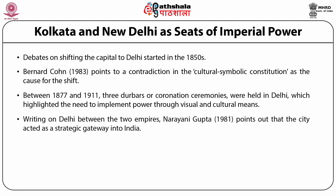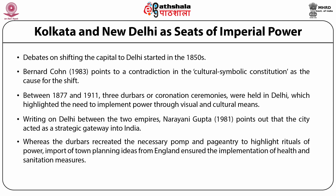Writing on Delhi between the two empires, Narayani Gupta points out that the city acted as a strategic gateway into India. Narayani Gupta describes the 1911 darbar as 'Badshah Mela' and compares George V and his consort to a 20th century Mughal couple. To explain the way New Delhi looks today, one has to understand the need of the imperial powers to create a sense of power through visual means. Whereas the darbars recreated the necessary pomp and pageantry to highlight rituals of power, import of town planning ideas from England ensured the implementation of health and sanitation measures. As Irving comments, the enlightened planning and homogenous clarity of New Delhi formed, to British eyes, a symbolic contrast with the heterogeneous confusion and narrow twisted byways of the existing cities.